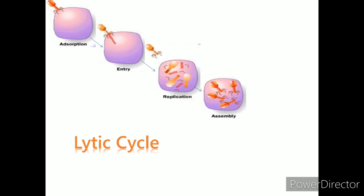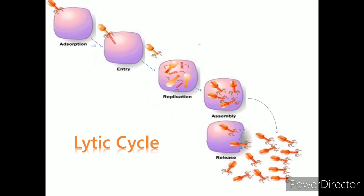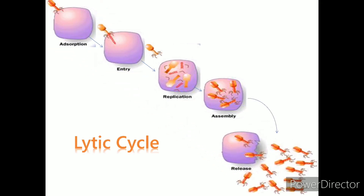As biosynthesis and replication continue, a large number of viral proteins and genomes are formed. Once enough viral particles are formed and matured, these particles undergo assembly, during which the genetic material of the virus is incorporated into the viral protein capsid. The newly assembled bacteriophages release the enzyme lysin into the cytoplasm. The enzyme causes lysis of the bacterial cell wall, resulting in the release of newly formed phage particles. Thus, at the end of the lytic life cycle, the infected bacterial cell and cell membrane are destroyed.